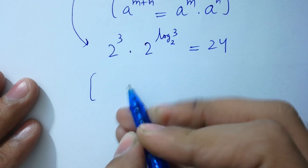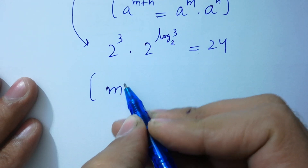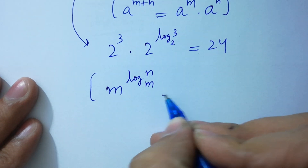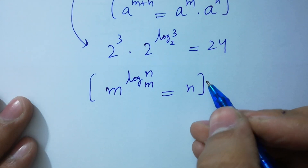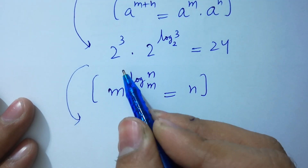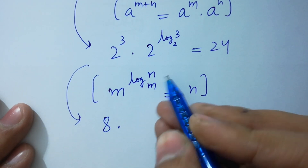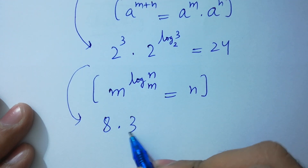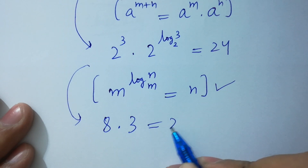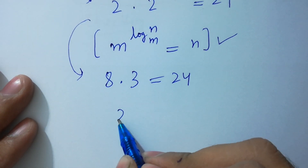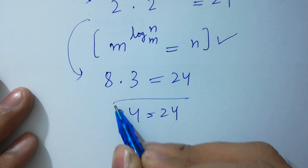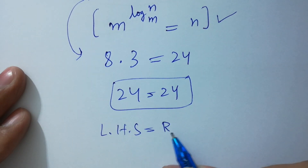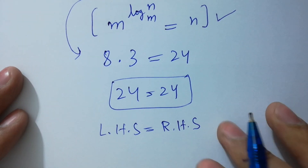And since m to the power log n to the base m equals n, so 2 to the power log 3 to the base 2 equals 3. We have 2 cubed which is 8, and 8 times 3 equals 24. Left hand side equals right hand side, which shows that we have solved it correctly.